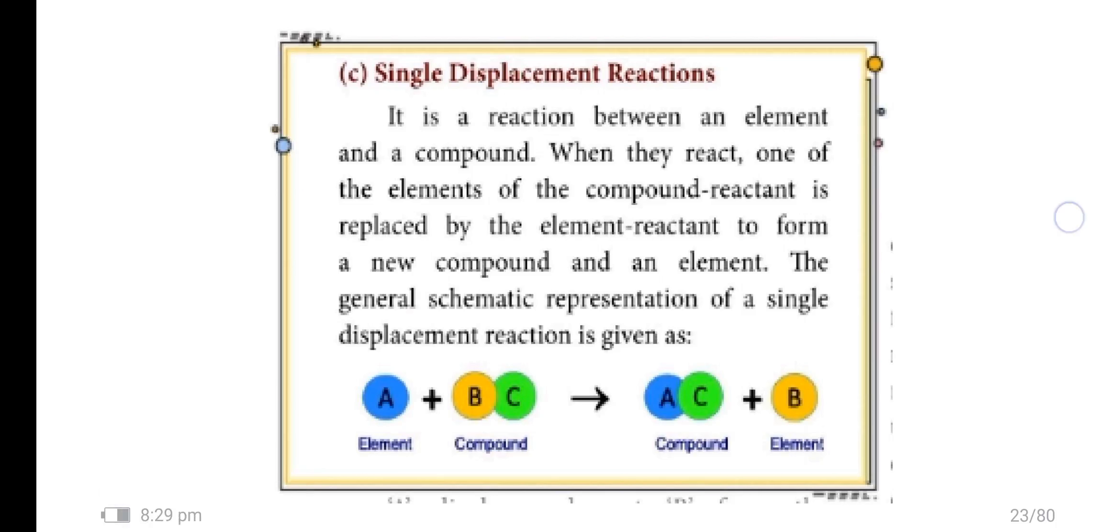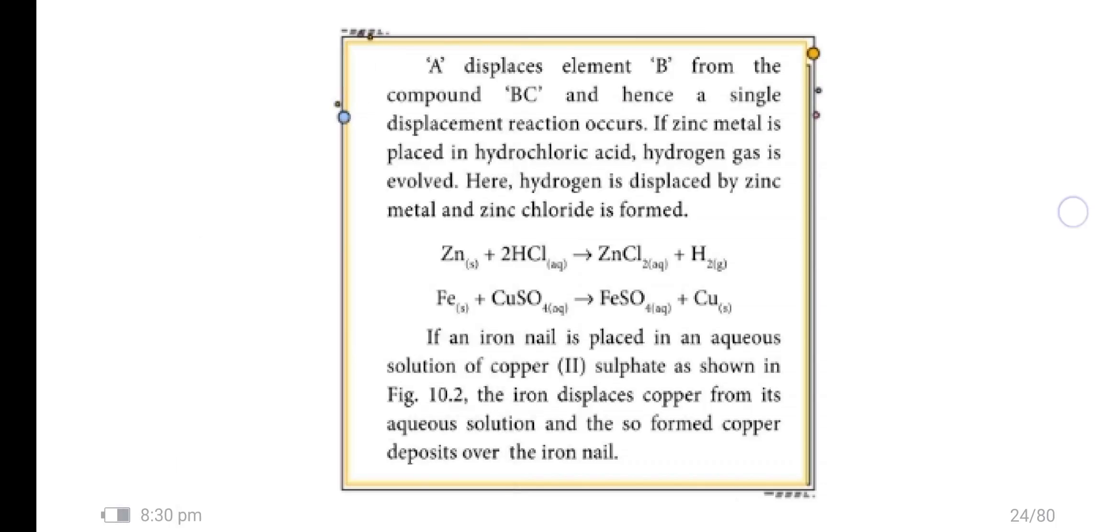Single displacement reaction. It is a reaction between an element and compound. When they react, one element of the compound reactant is replaced by the element reactant to form a new compound. For example, when zinc metal is placed in hydrochloric acid, hydrogen gas is evolved. Here hydrogen is displaced by zinc metal and zinc chloride is formed: zinc plus 2HCl gives zinc chloride plus hydrogen gas.